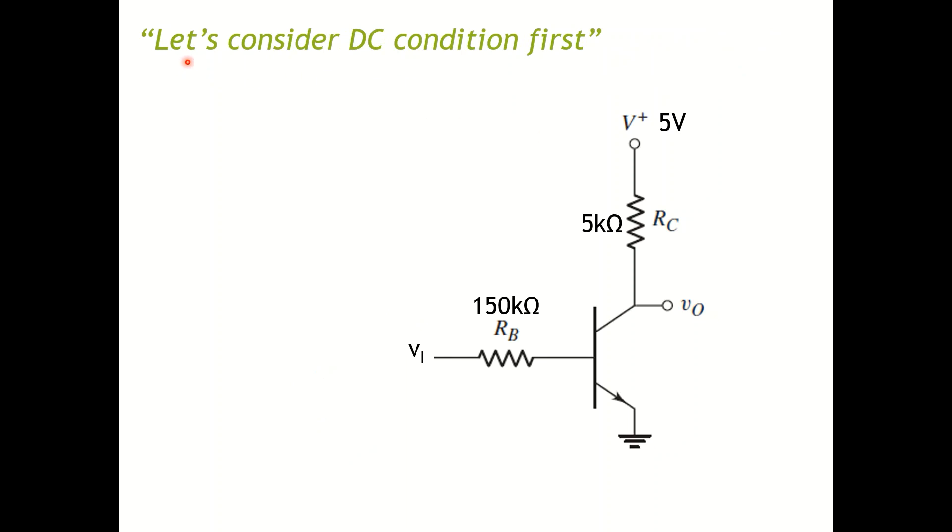First of all, let's consider DC condition first. I will assume there's no varying signal, so the small VI varying signal will become zero and I can assign this one to be equal to VBB. There's no variation in signal right now, everything is DC. I will first analyze this loop right here to figure out what is my IB. So I have the equation here: IB equals VI, this voltage, minus VBE on, which is this voltage at this point, over RB, which is this one.